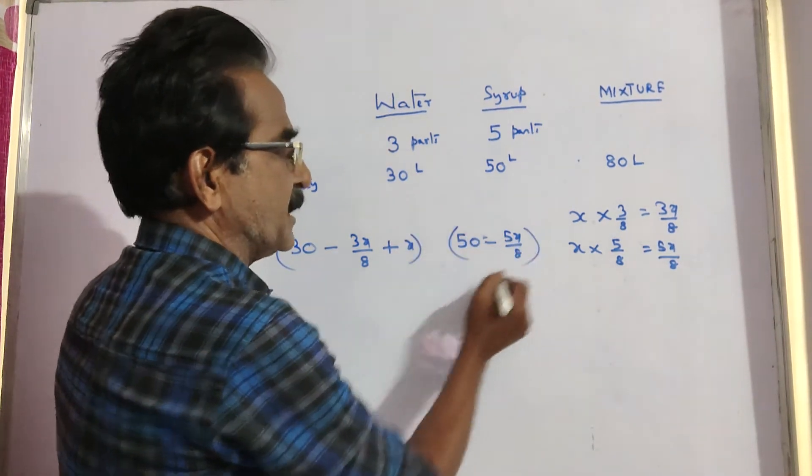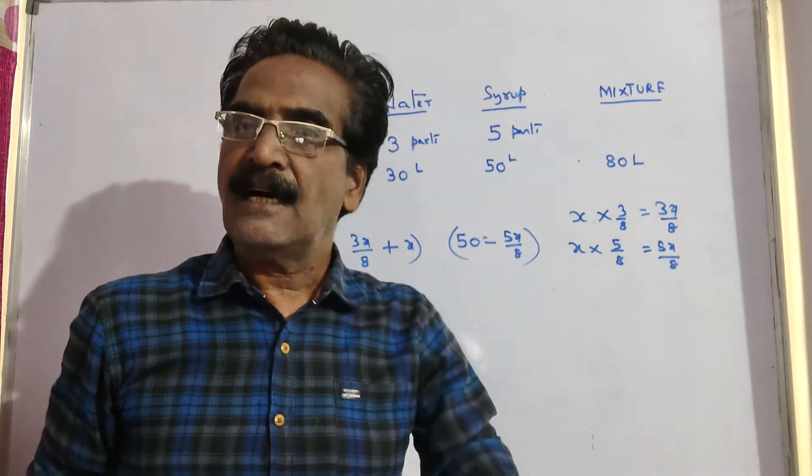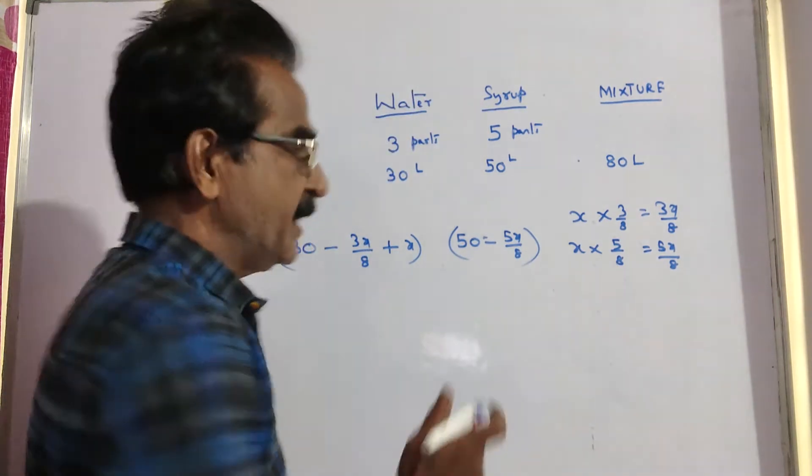So, these are the present quantities and the problem says the mixture may be half water and half syrup. So, these two must be equal.